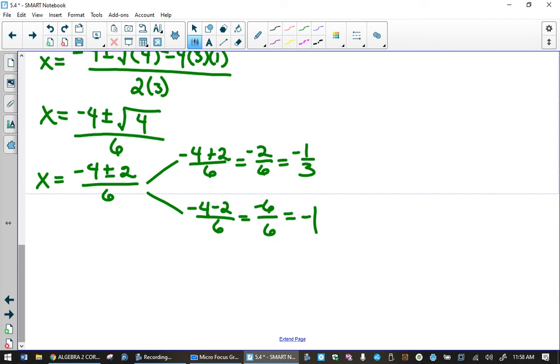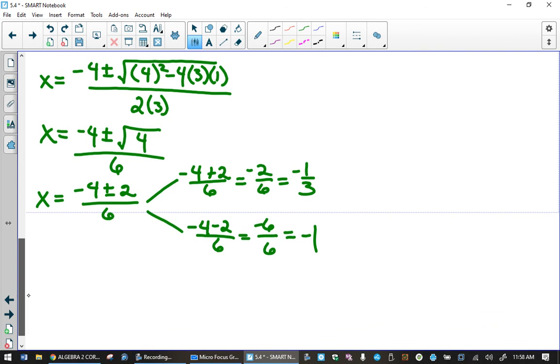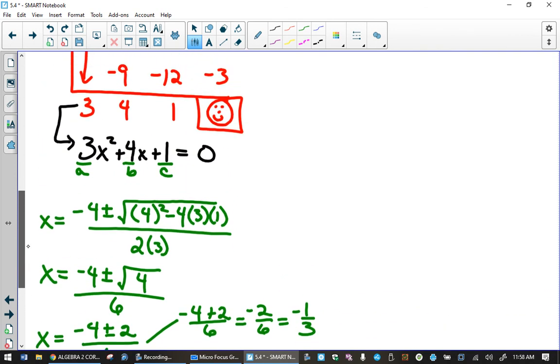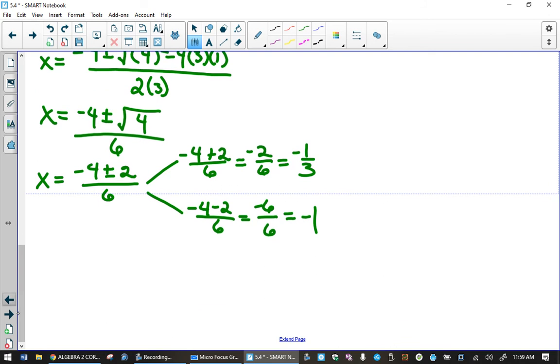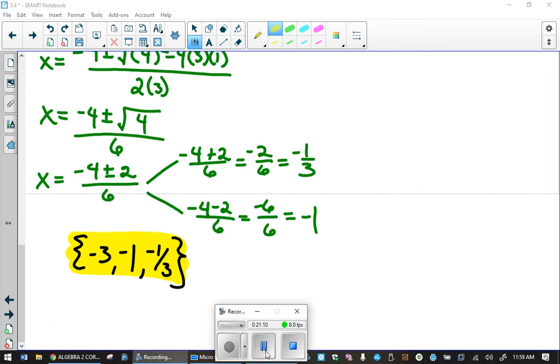So, in the end, our solutions that we had to work hard to find are negative 1 third and negative 1. And we were given negative 3 in the beginning for free. So, we want to include all of those in our final answers. Alright, one more time, I'm going to pause the video and give you a minute to do the last problem. And then, you can come back and check your results with me when you're done.